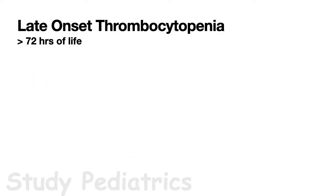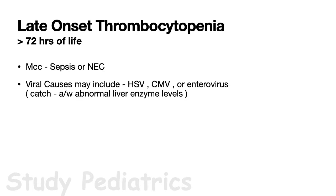Late onset thrombocytopenia occurs more than 72 hours after birth. The most common cause is sepsis or necrotizing enterocolitis. Other causes include viral causes such as HSV, CMV, or enterovirus. Notably, viral causes of late onset thrombocytopenia are associated with abnormal liver enzyme levels, so these should be checked.